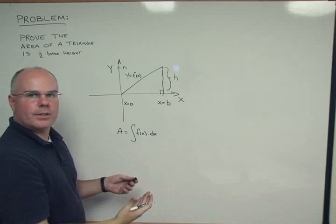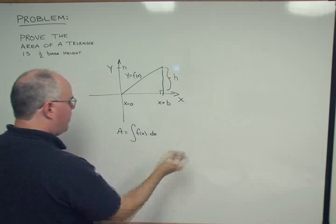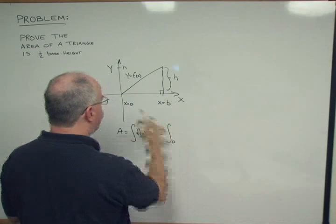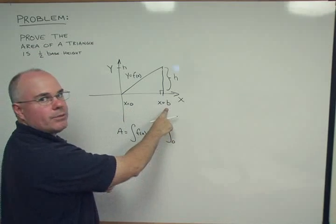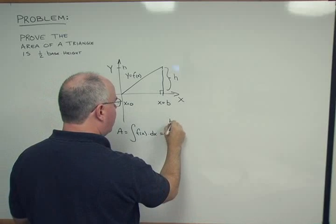So let's put it all together and see if this holds true. So we're going to integrate from 0, x equals 0 to x equals b, the base of this triangle.